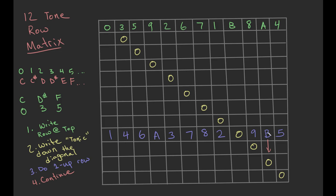I like to call step three the 'one up row.' Step four is simply to continue. Now we have a new B and a new zero, and we do the same thing again. B plus one equals zero, so five plus one is six, nine plus one is A, zero plus one is one, two plus one is three, eight becomes nine — you can do this quite quickly.